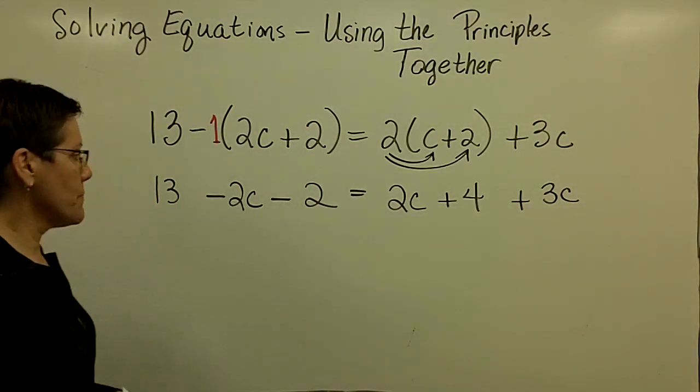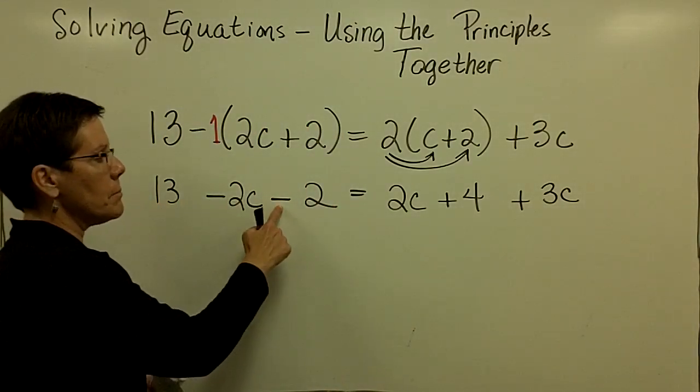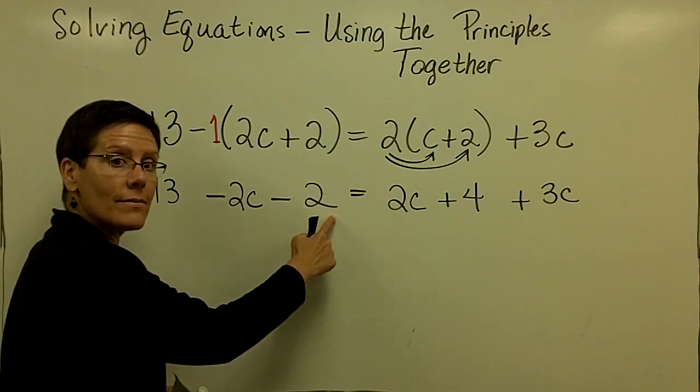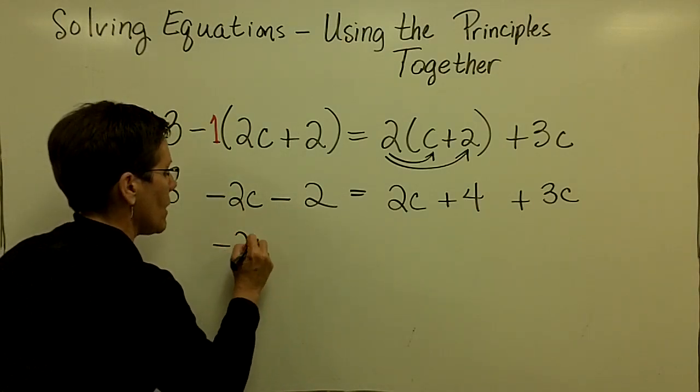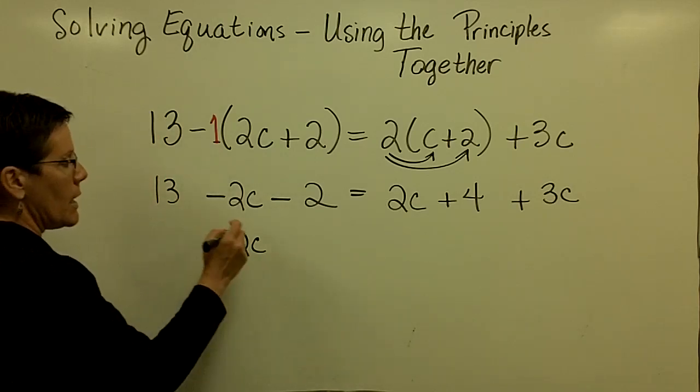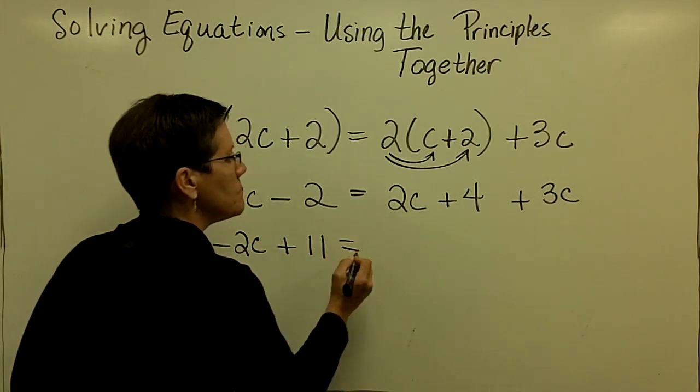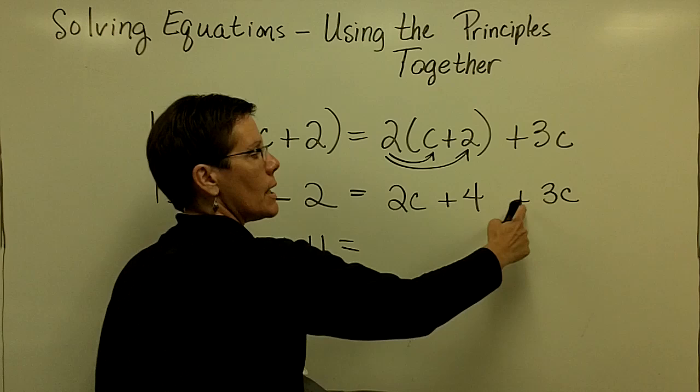Collect your like terms. On the left side, 13 minus 2 is 11. I like to put the term with the variable in it first. And then bring the 11 down. And then 2c plus 3c.